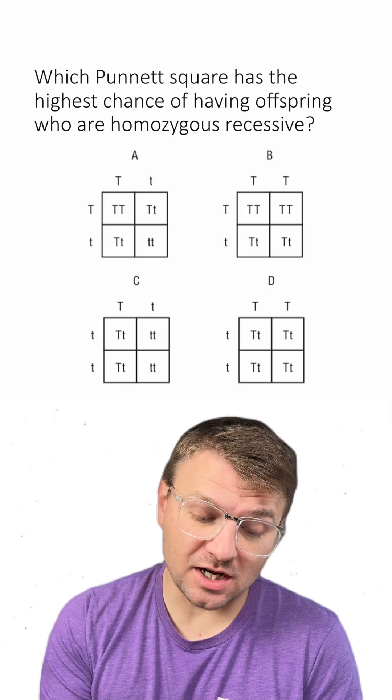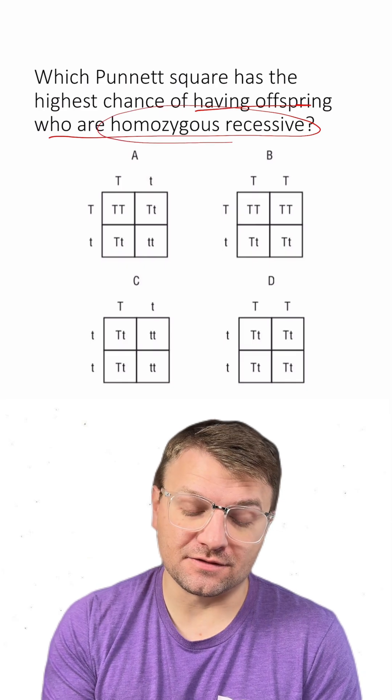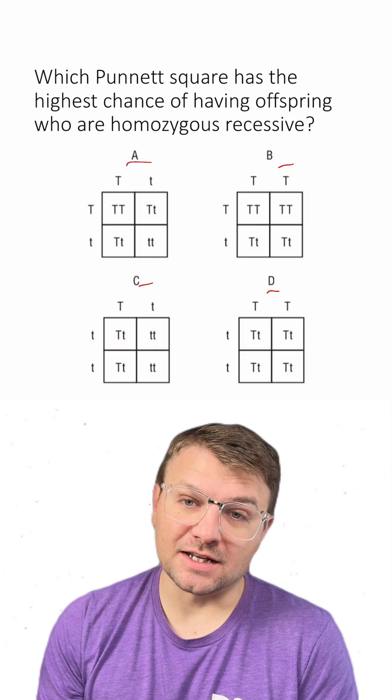Which Punnett square has the highest chance of having offspring who are homozygous recessive? Looking at our answers, we have A, B, C, and D.